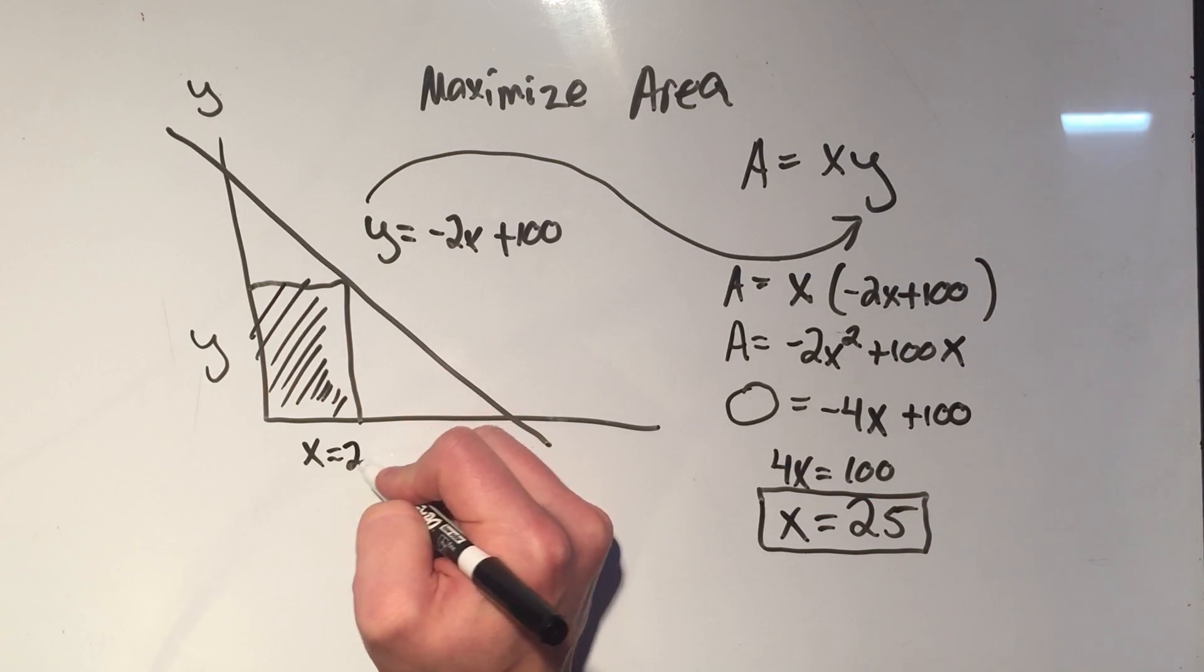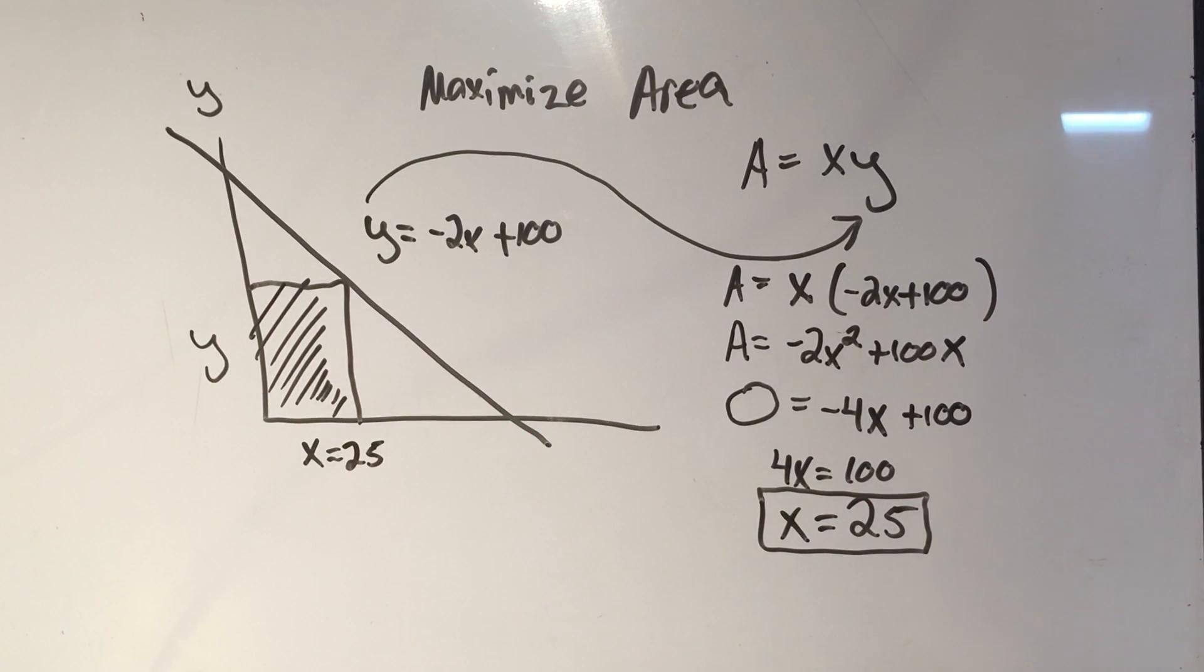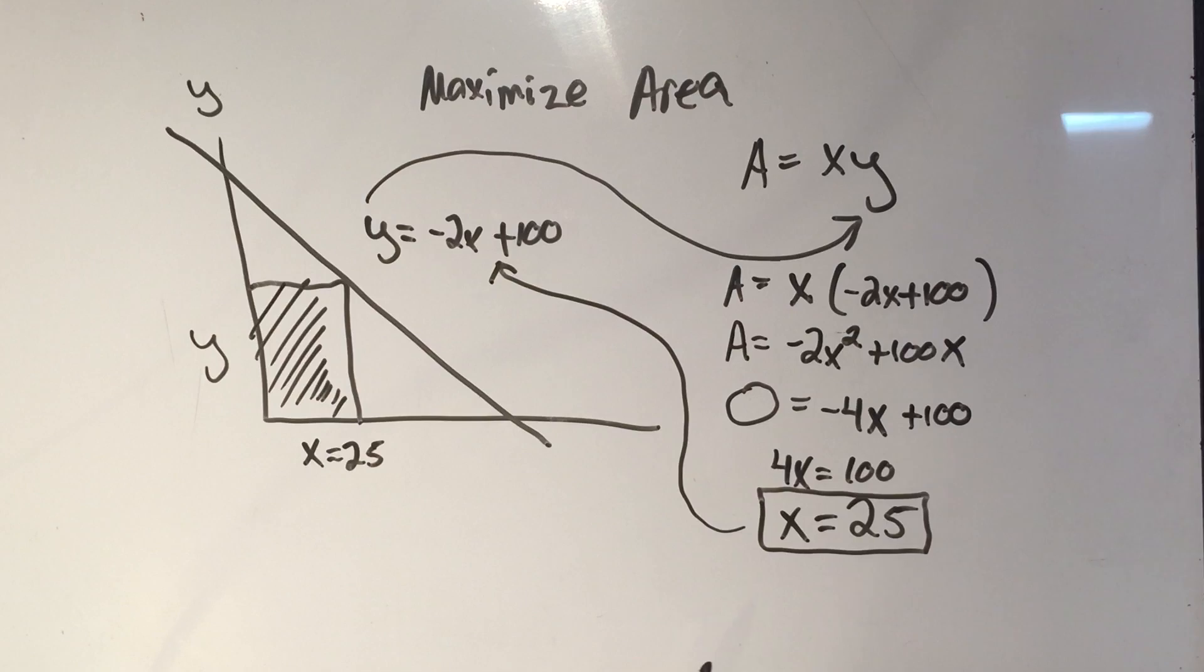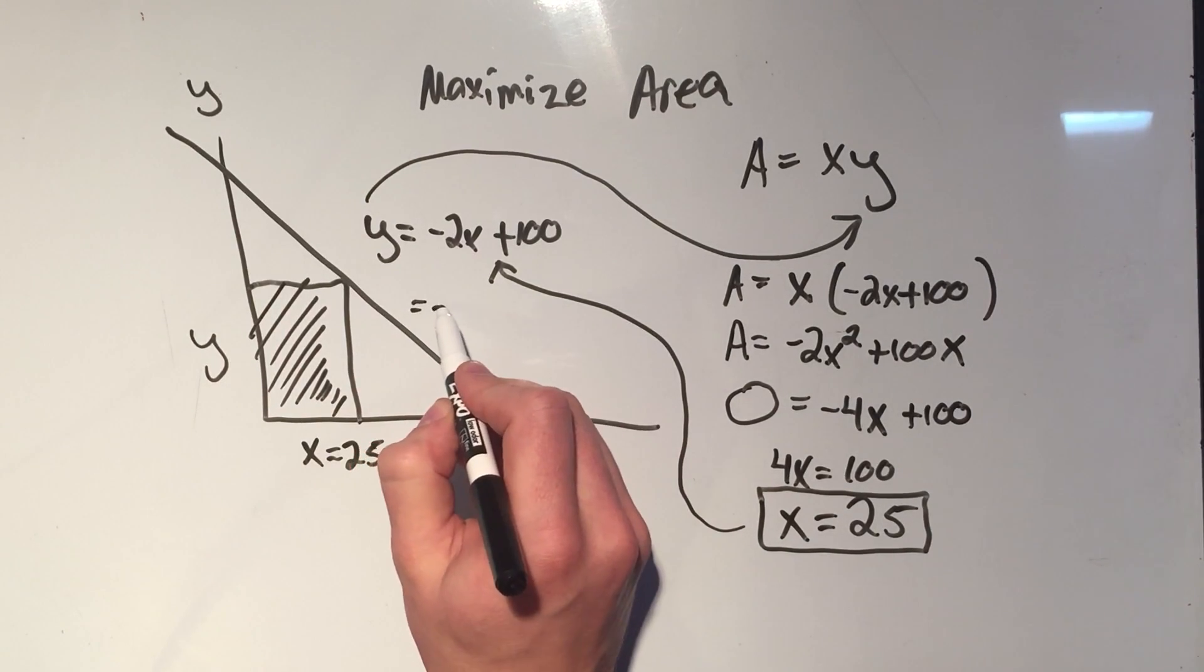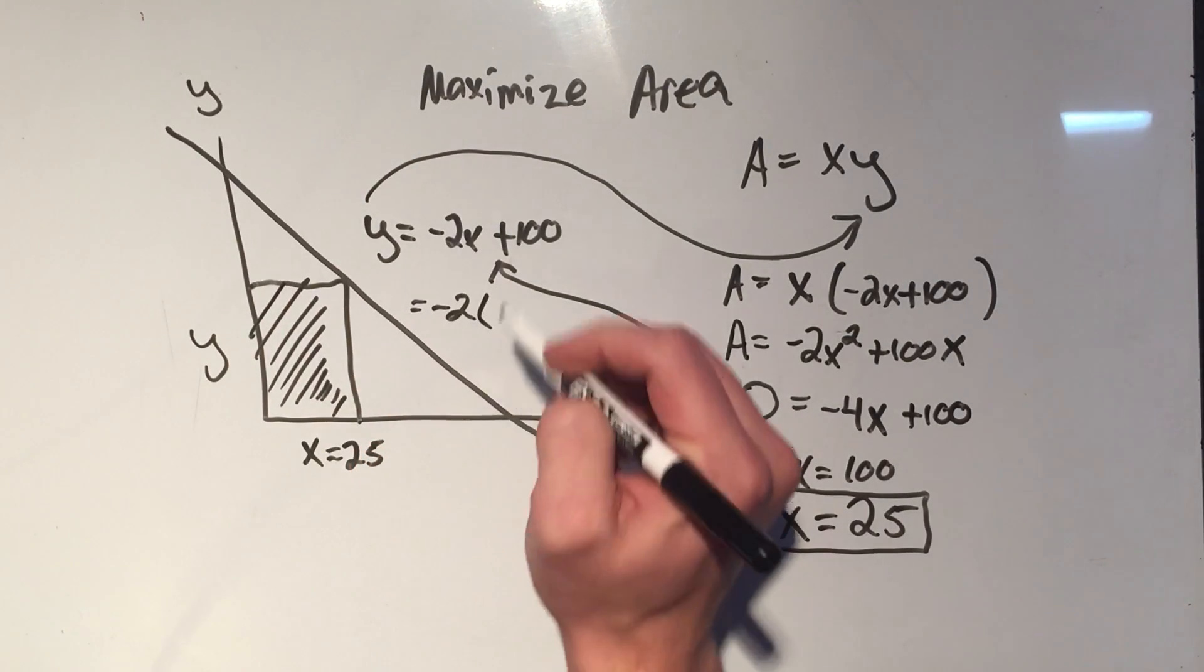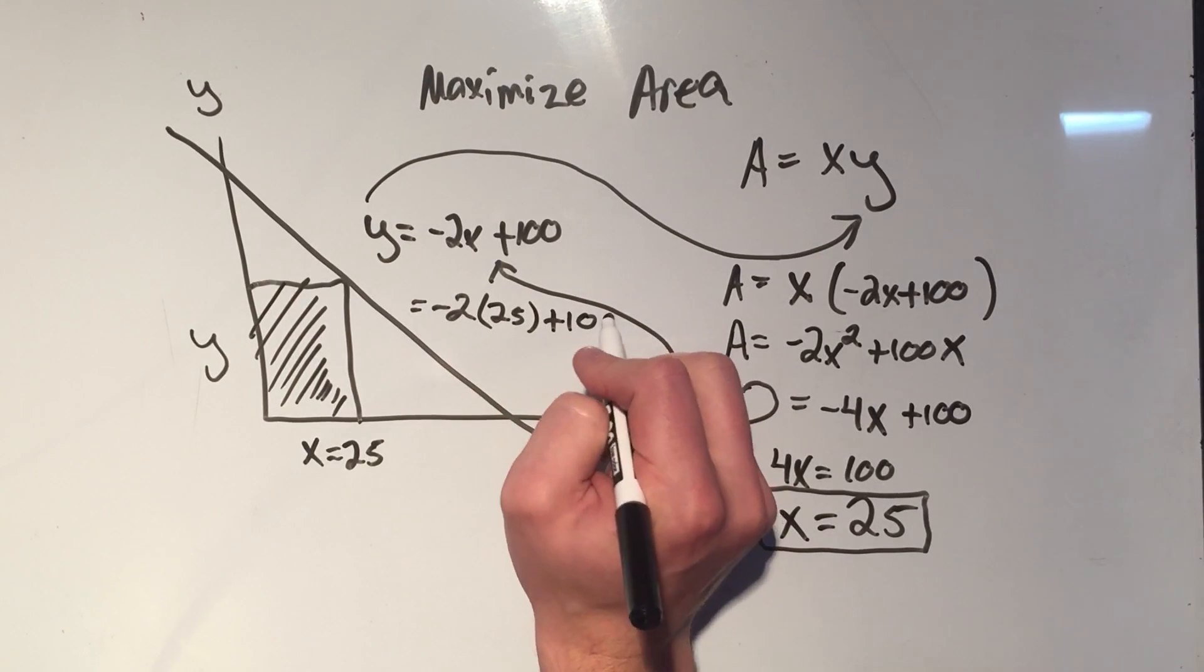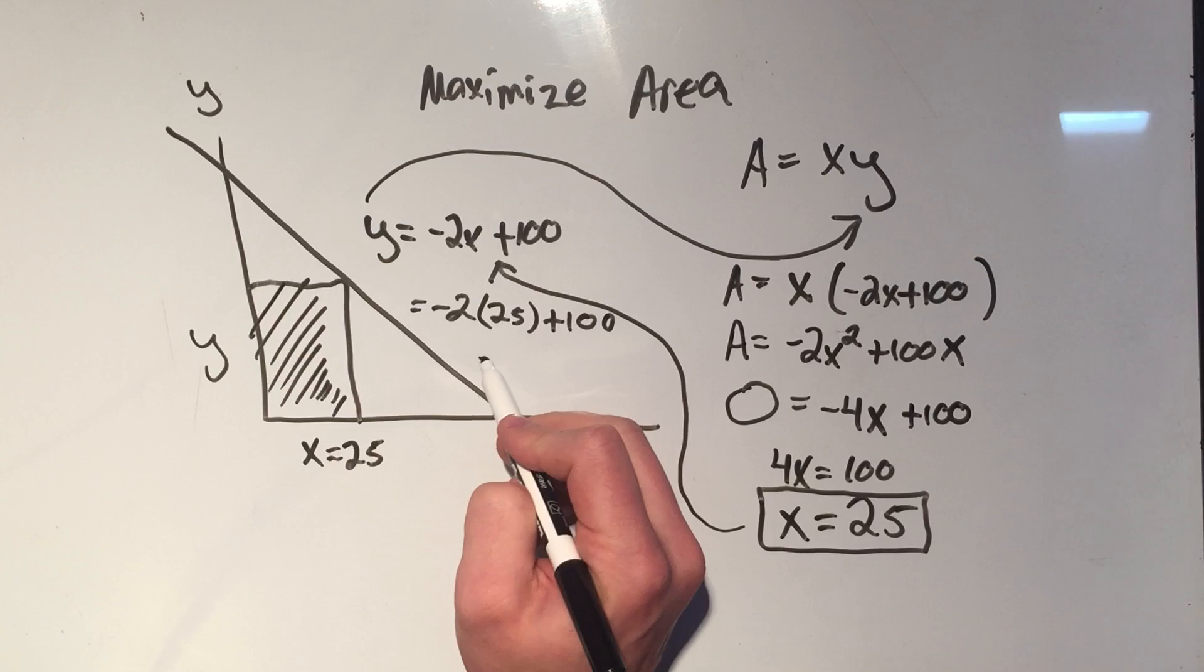I know that the width of this rectangle is 25. If I want to know y, I'll plug x into the y equals equation. So y equals minus 2x. And we just found x to be 25.